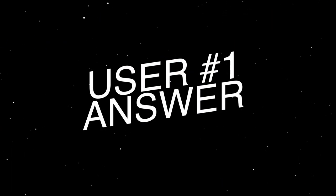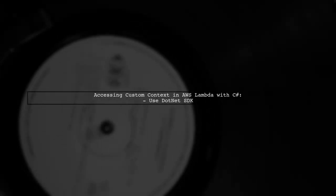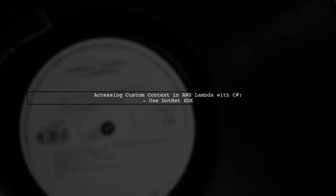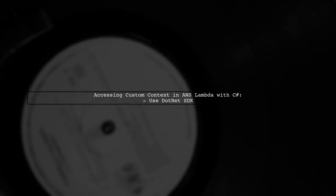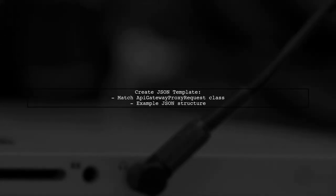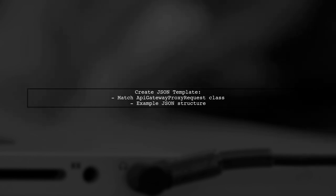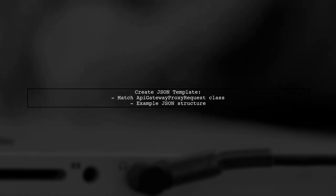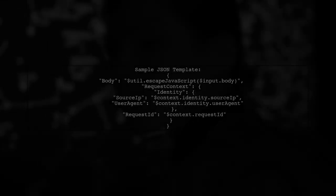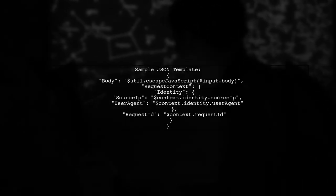Let's now look at a user suggested answer. If you're looking to access custom context in AWS Lambda using C-sharp, here's a helpful approach. First, ensure you're using the .NET SDK. In the AWS API Gateway mapping template, create a JSON template that matches the API Gateway proxy request class. This allows for proper deserialization. In the example, you can extract the body, source IP, and user agent from the request context. Here's a sample JSON template.